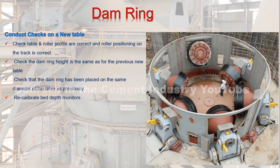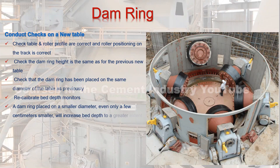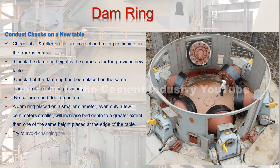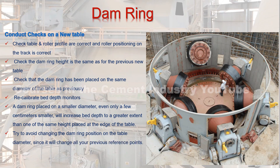4. Recalibrate bed depth monitors. 5. A dam ring placed on a smaller diameter — even only a few centimeters smaller — will increase bed depth to a greater extent than one of the same height placed at the edge of the table. 6. Try to avoid changing the dam ring position on the table diameter, since it will change all your previous reference points.